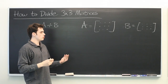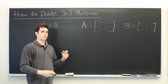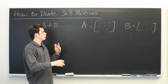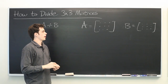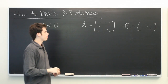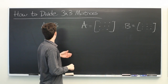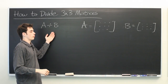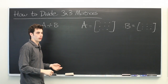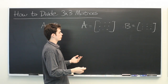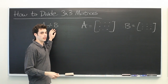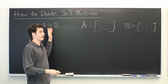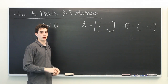Division of matrices — there is no direct way of doing it. But what one can do is simply recall that division is the inverse of multiplication. In other words, in order to get A divided by B, we can simply multiply A by the inverse of B.